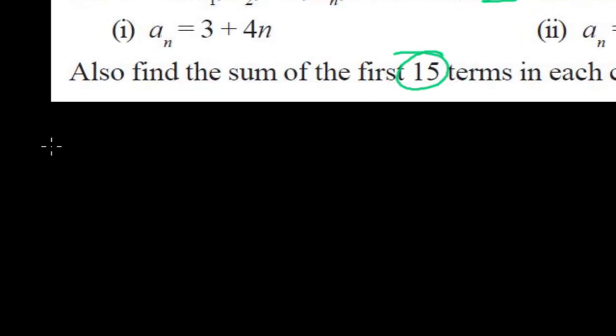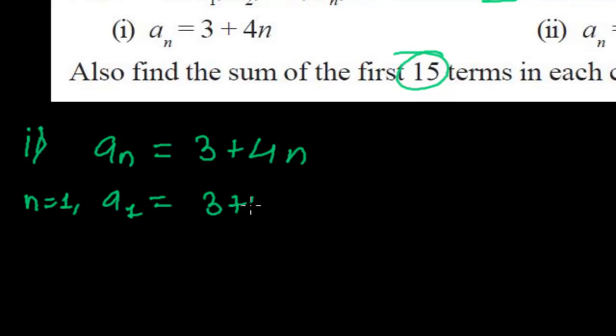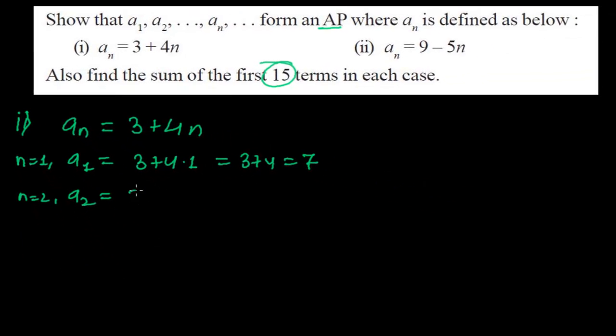Let me write the first case, that is aₙ = 3 + 4n. When n equals to 1 we'll get the first term a₁ = 3 + 4 × 1 = 3 + 4 = 7. And again when n equals to 2 we'll get the second term, that is 3 + 4 × 2 = 3 + 8 = 11.